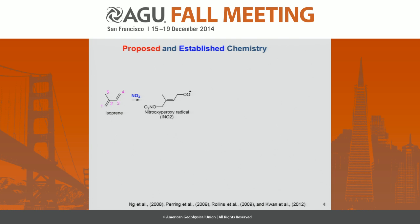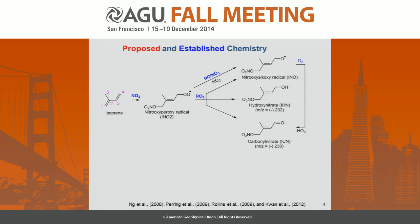A lot of chamber studies have been done on isoprene NO3 chemistry. Isoprene reacts with NO3 to form a peroxy radical, then reacts with NO or NO3 to form an alkoxy radical, or reacts with RO2 to form two alkoxy radicals or a hydroxy nitrate and a carbonyl nitrate. The RO2 plus RO2 and RO2 plus NO3 pathways have been well studied, but less focus has been on the RO2 plus HO2 pathway, though we can still tell that nitroxyhydroperoxide forms from this pathway.